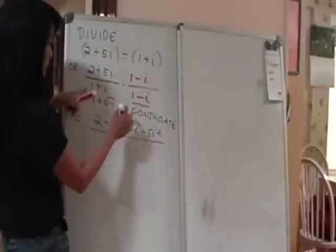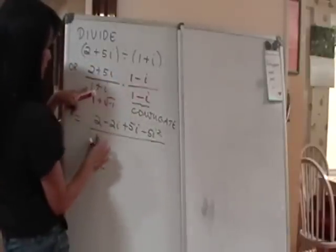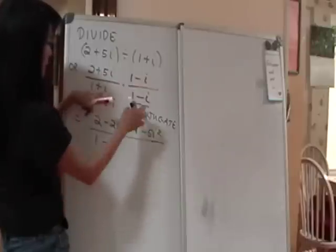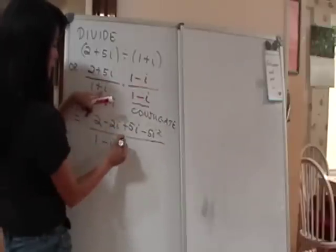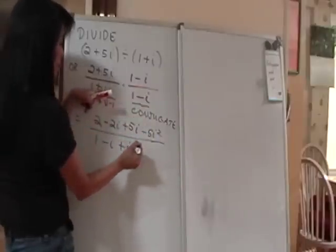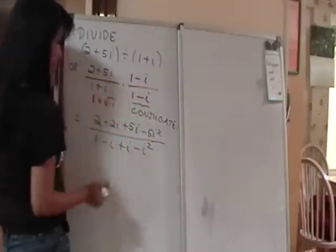Then over here, we'll have 1 times 1 is 1. 1 times negative i is negative i. i times 1 is plus i. Positive i times negative i is negative i squared.